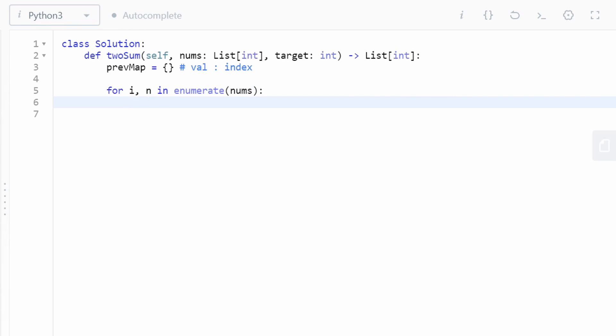Before we add this to our map, let's check if the difference, which is equal to target minus n. Now let's check if this difference is already in the hash map. If it is, then we can return the solution, which is going to be a pair of the indices. So I can get the first index like this, and the second index is just i.